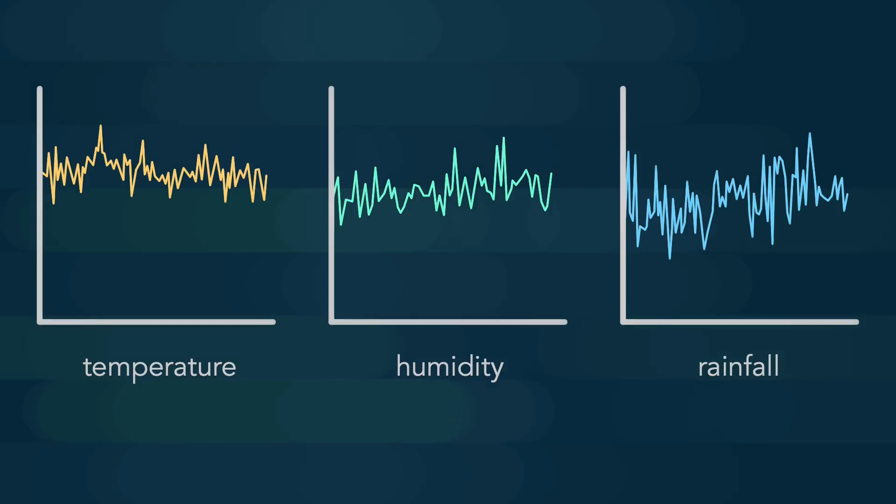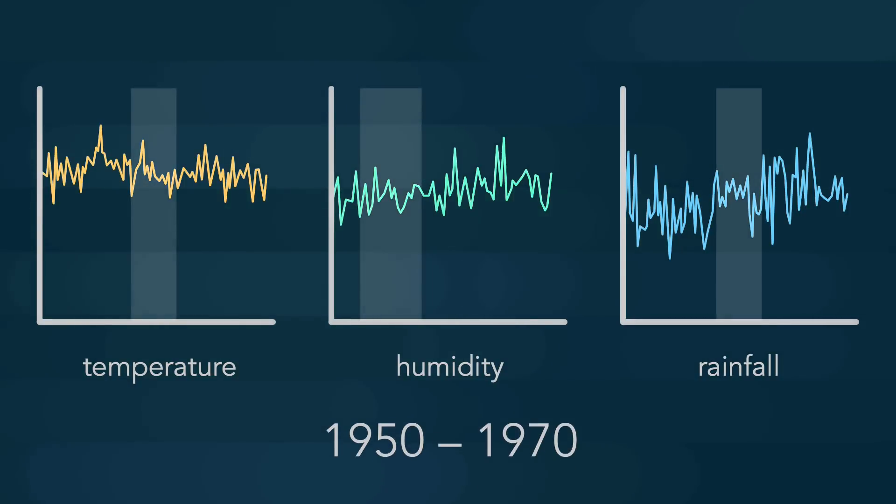The researchers analyzed historical weather data and found that the most significant changes in the Midwestern climate were centered on the period of 1950 to 1970. After this period, summers tended to be cooler, more humid, and with more rainfall.